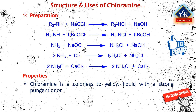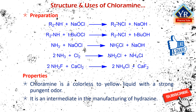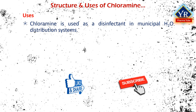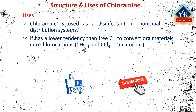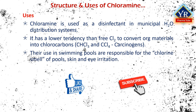Chloramine is a colorless to yellow liquid with a strong pungent odor. It is less aggressive than chlorine and more stable against light than hypochlorites. It is an intermediate in the manufacturing of hydrazine. Chloramine is commonly used in low concentrations as a secondary disinfectant in municipal water distribution systems as an alternative to chlorination. Chloramine has a much lower — but still active — tendency than free chlorine to convert organic materials into chlorocarbons such as chloroform and carbon tetrachloride, which have been identified as carcinogens. Chloramines used in swimming pools are responsible for the chlorine smell of pools as well as skin and eye irritation, which are the result of insufficient levels of free available chlorine.